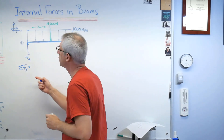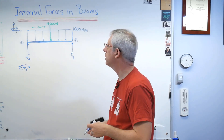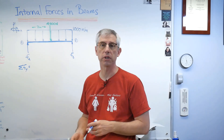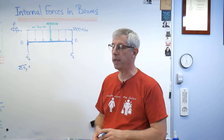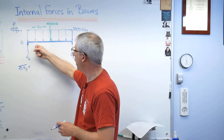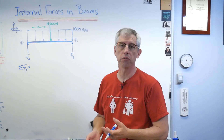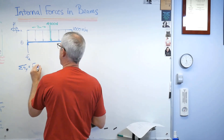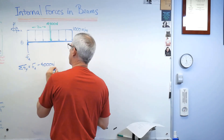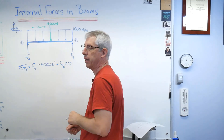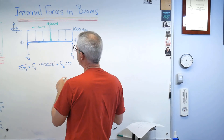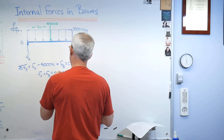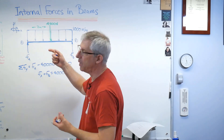We're going to sum the forces in the y-direction. There's no point summing forces in the x-direction since there are no x-direction forces — the horizontal reaction would turn out to be zero anyway. Summing vertical forces: FA minus 4,000 newtons plus FB equals zero, so FA plus FB equals 4,000 newtons. No big surprise — the sum of the two reaction forces has to equal the total load.